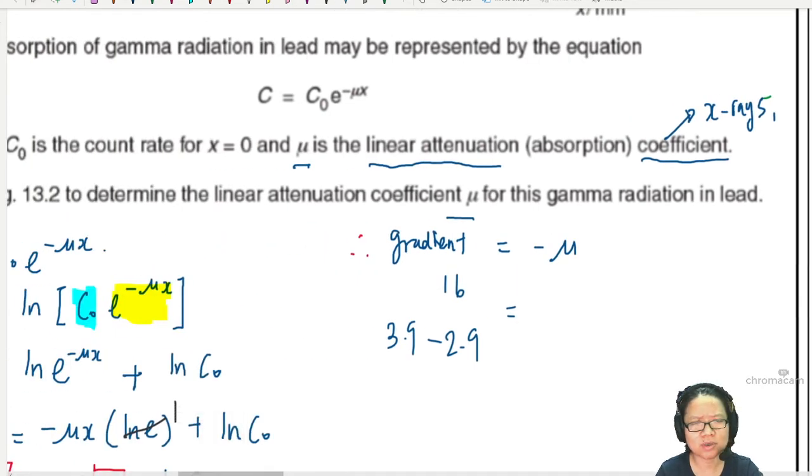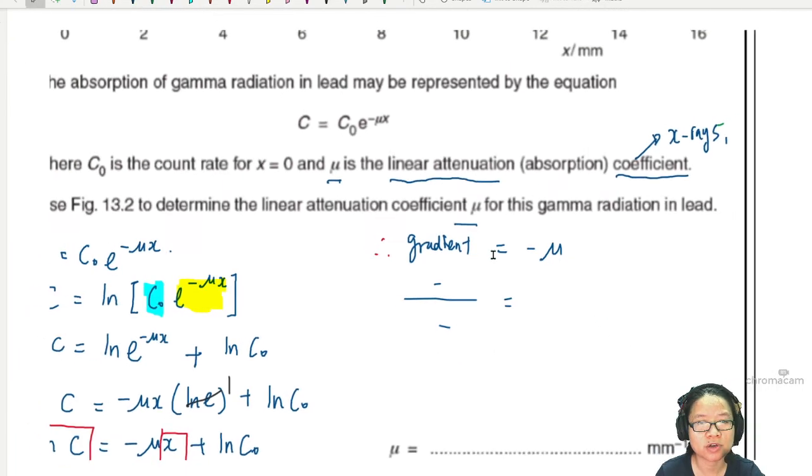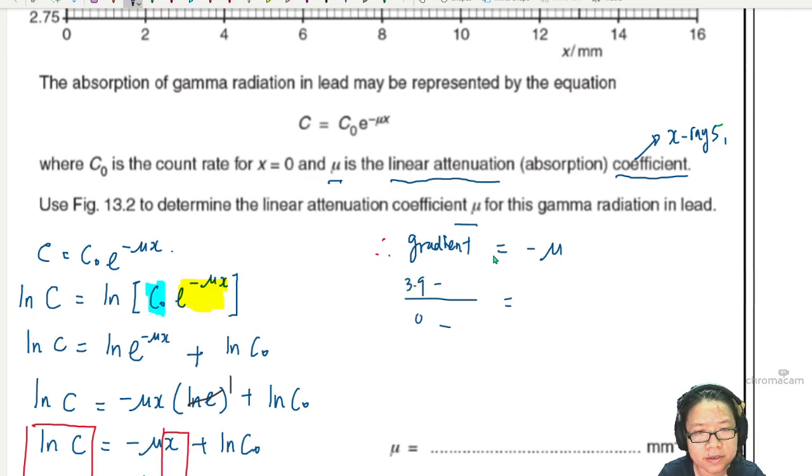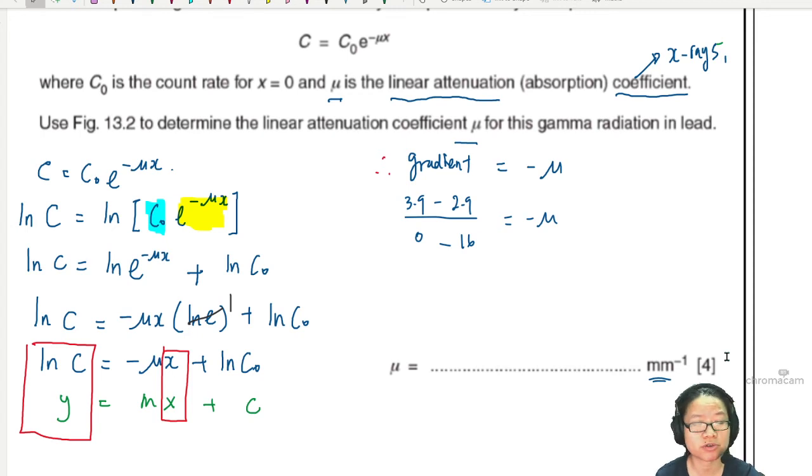So I substitute inside (0, 3.9) and (16, 2.9). Y₂ minus Y₁, X₂ minus X₁. It'll be 3.9 minus 2.9 over 16 minus 0. This equals -μ, and the unit is mm^(-1). So you don't have to convert anything, just press your calculator. This would be 1 divided by 16, which equals -0.0625 = -μ. So your μ, your linear attenuation coefficient, is 0.0625 mm^(-1). Your final answer can be 0.063. You can write 2 or 3 significant figures. I'll just stick to 3 significant figures.